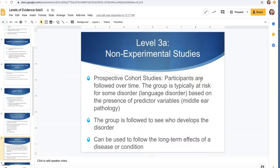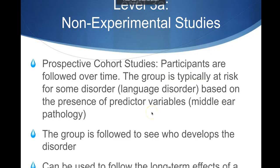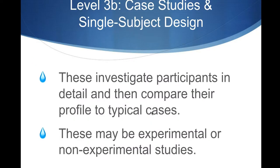Level three can be a non-experimental study. The key thing to know is there's no variable being manipulated by the researcher. For example, you could follow people over time — say, kids who've had a middle ear infection — and try to see how many of those kids versus kids without a middle ear infection end up with a language disorder. There's no intervention; the researcher is not intervening in any way. The other kind of level three is an intervention study, but not a group study — either case studies or single-subject designs.